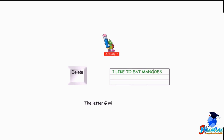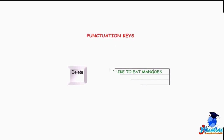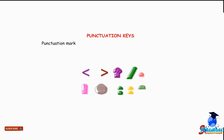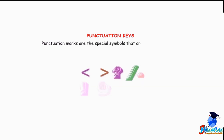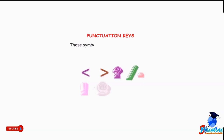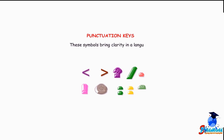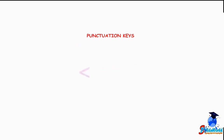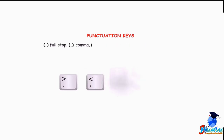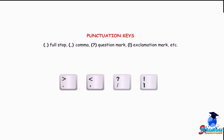Punctuation marks are special symbols used while writing a paragraph or sentence. These symbols bring clarity in a language. Some common punctuation marks are: full stop, comma, question mark, exclamation mark, etc.